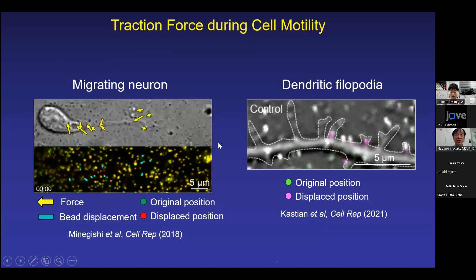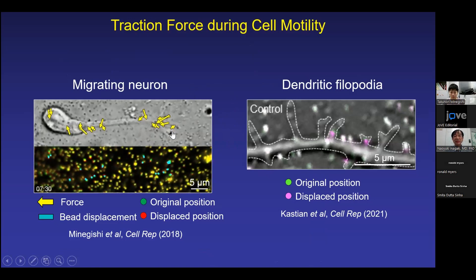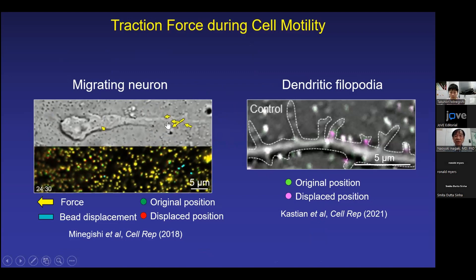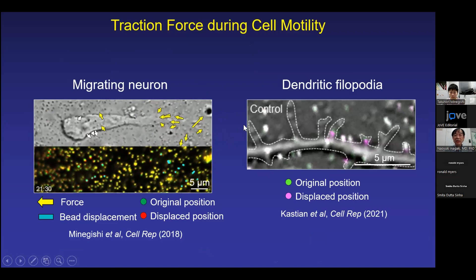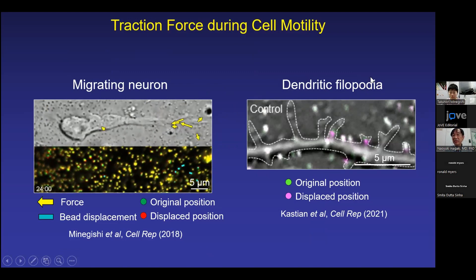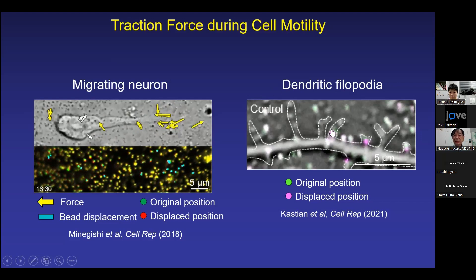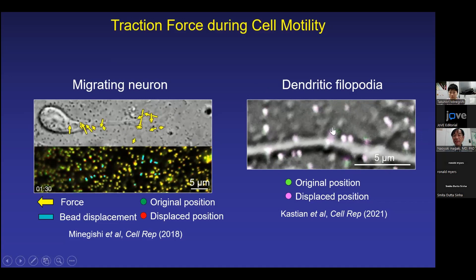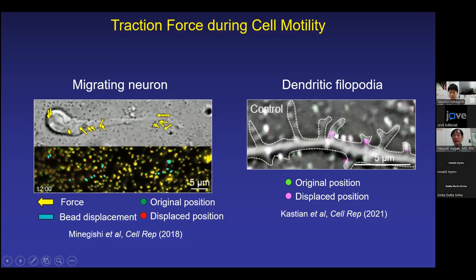We can also measure the traction force in various cell areas. This is an example of migrating neurons, and you can see a prominent traction force is produced at the growth cone of the leading edge of the migrating neuron. Another example is dendritic filopodia, precursors of dendritic spine, which form post-synapses. This tiny spine produces traction force to form the dendritic spine.